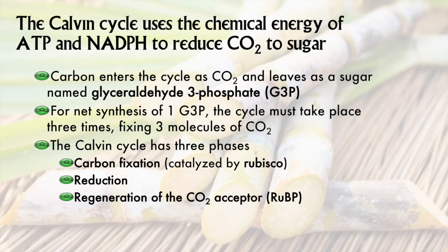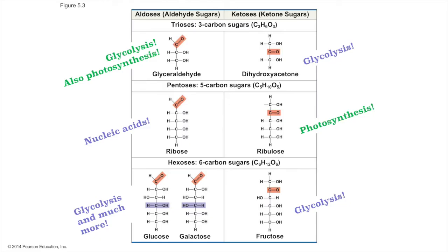This three-carbon sugar has actually snuck into our slides twice already. The first time was back in Chapter 5, when I told you about how simple carbohydrates — monosaccharides — can vary in the number of carbon atoms in their skeletons. It's a three-carbon aldose with a phosphate group. There's another very important carbohydrate we are going to see in a couple of slides.